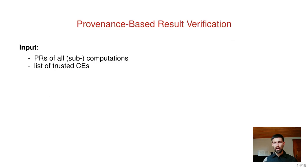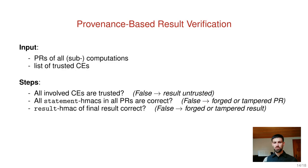On this slide we show how the provenance metadata can be used for result verification. The input to our procedure is the provenance records of all subcomputations and a list of trusted compute entities. The verification goes in three steps. In the first step, it is checked if compute entities were involved which are not trusted — if this fails the result should be seen as untrusted. In the second step, all HMAC statements in all provenance records are checked — if this fails the respective provenance record is assumed to be forged or tampered. In the third step, the result HMAC of the final result is checked — if this fails the final result is assumed to be forged or tampered.